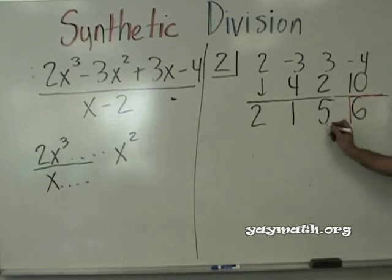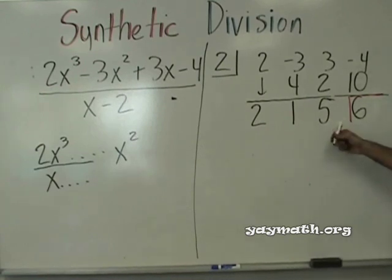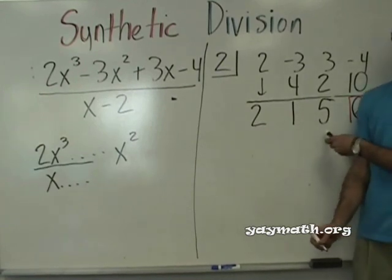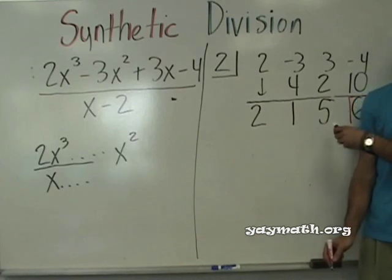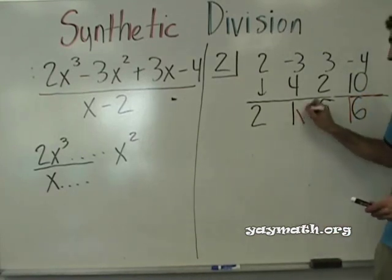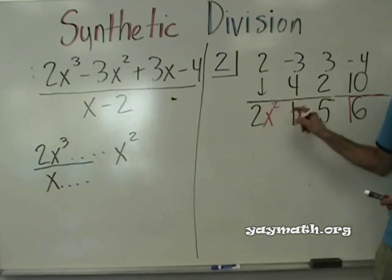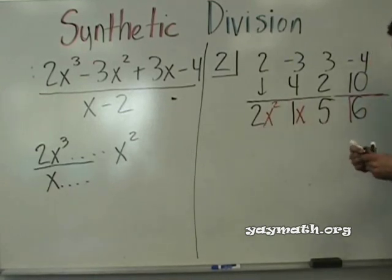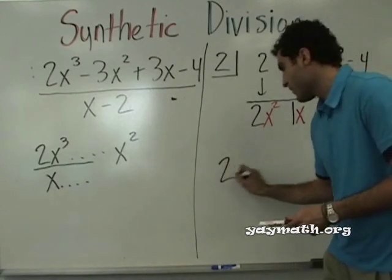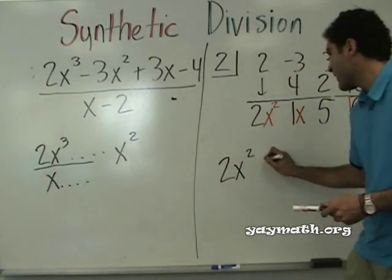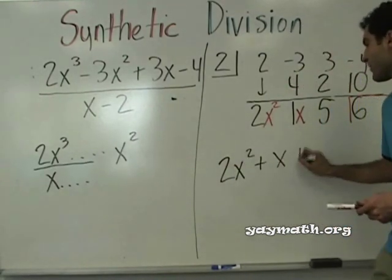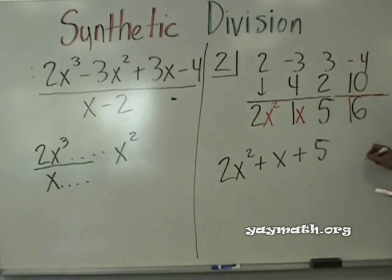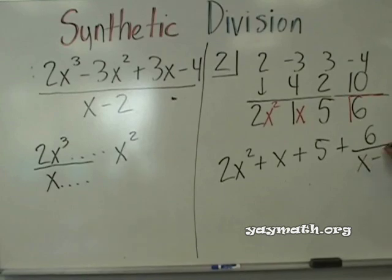And the terms going up: 5, then 1x — wait, that's a common mistake. People think 5 is just with x; no, it's just the constant number. Then 1x, x squared. If it's positive, it's plus; if it's negative, it's minus. The answer is 2x squared plus x plus 5 plus 6 over x minus 2.